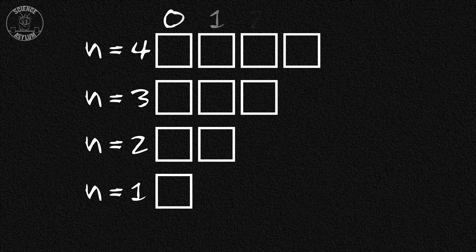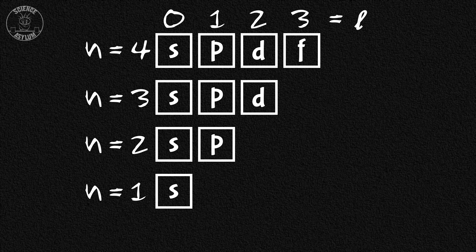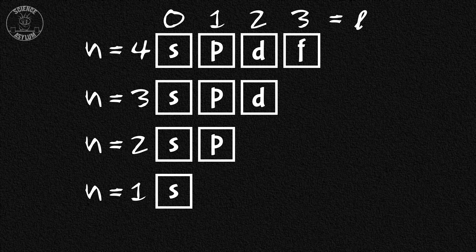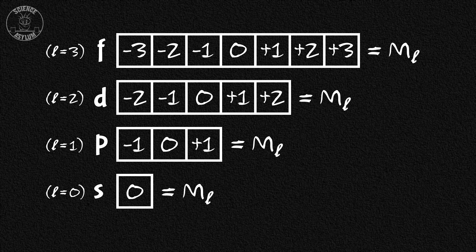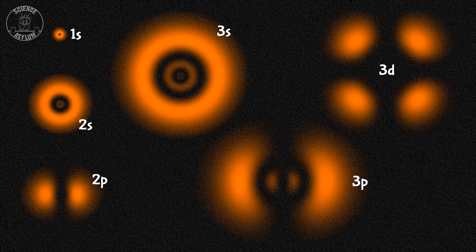You can label these types with another number based on angular momentum, or with a letter for historical reasons we won't go into. Each of those types is then subdivided into a number of orbitals based on how the angular momentum is tilted. And before someone comments 'you forgot to mention the shapes' — yes, different orbitals have different shapes and orientations, but that doesn't really matter until atoms start bonding to each other. Forget about that for right now.